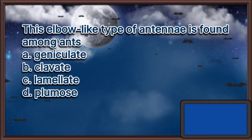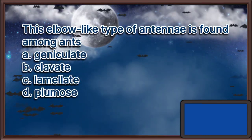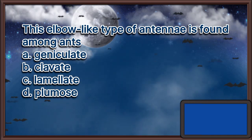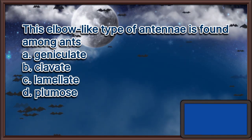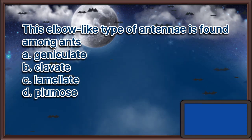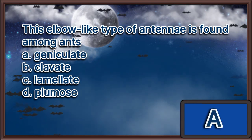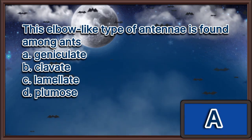This elbow-like type of antennae is found among ants. A. Geniculate. B. Clavate. C. Lamellate. D. Plumose. The answer is letter A.